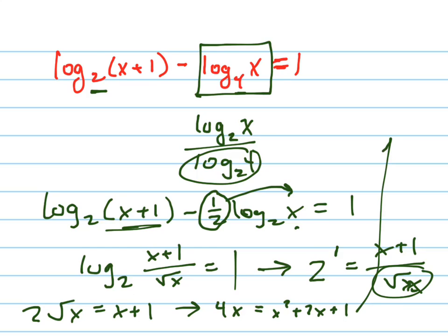Subtract 4x from both sides because I've got a quadratic now. So it's x squared minus 2x plus 1. And now it's x minus 1 squared, right? Which means x equals 1.